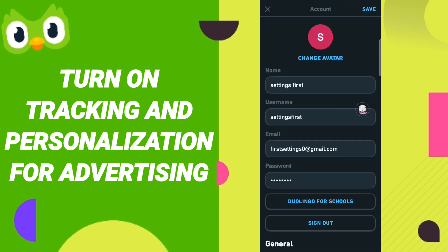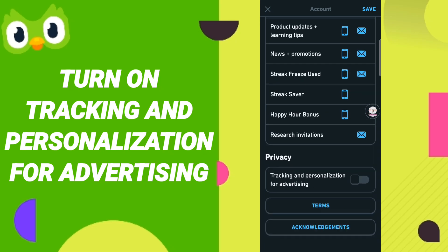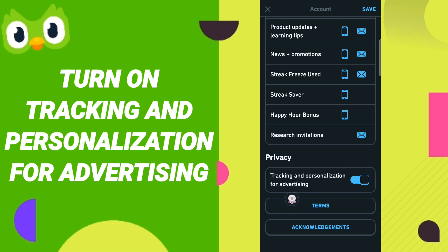In the settings page, scroll down to find the option and click on it. If the toggle changes to blue, then you have turned on tracking and personalization for advertising on the Duolingo app. Make sure to click Save.